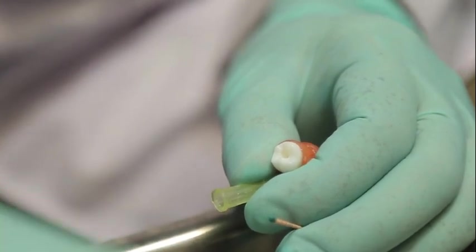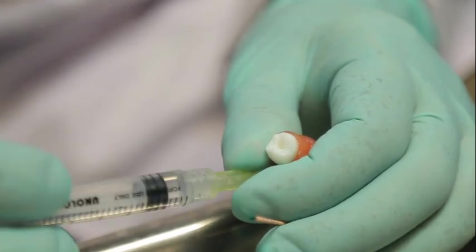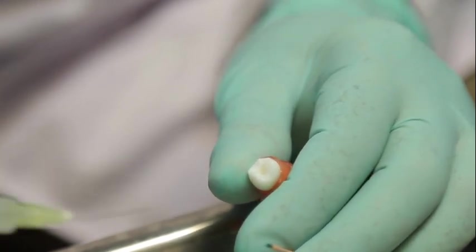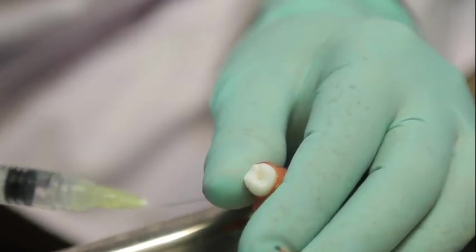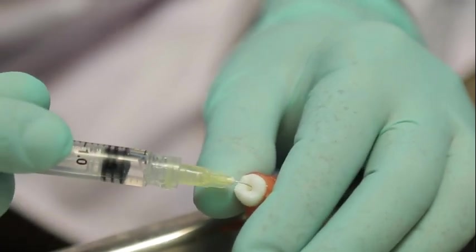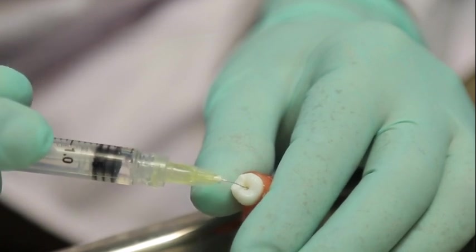So first I am using EDTA just before the obturation. Throughout the procedure of instrumentation you can use hypochlorite inside the canal. After the selection of the master cone, just before obturation you have to irrigate the canal with 17% EDTA of course.